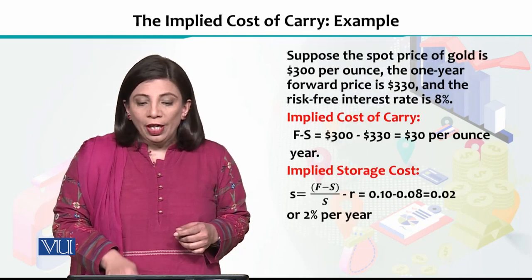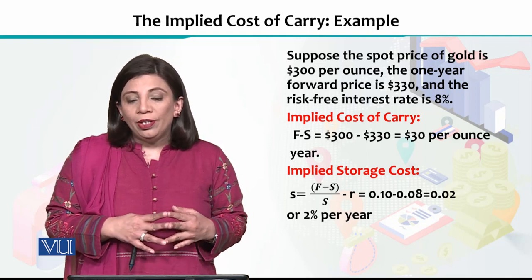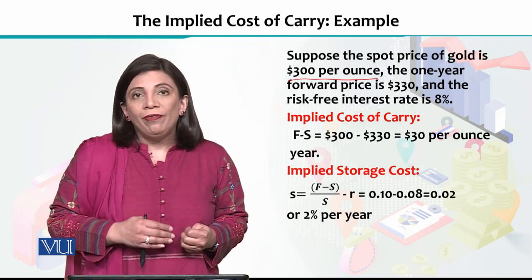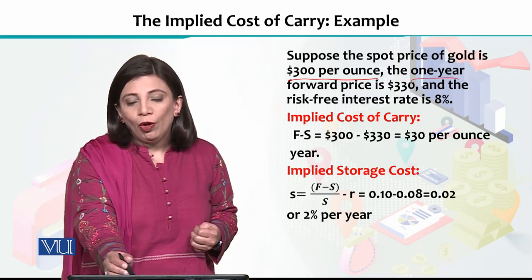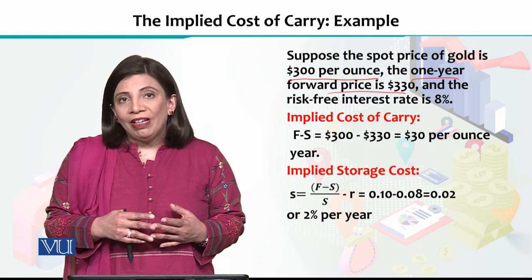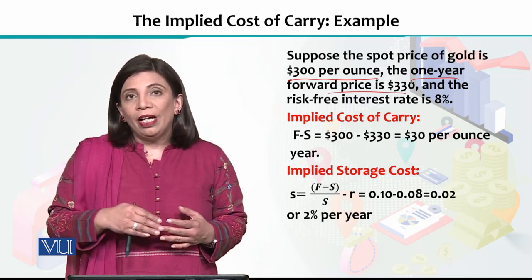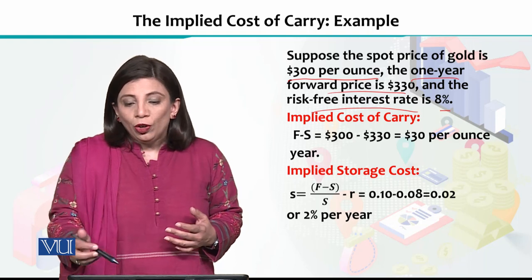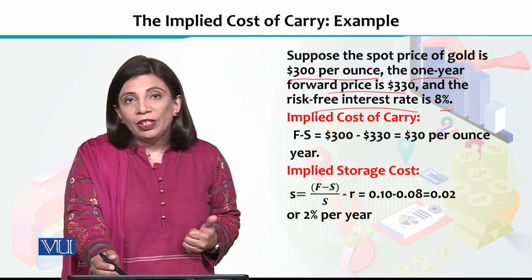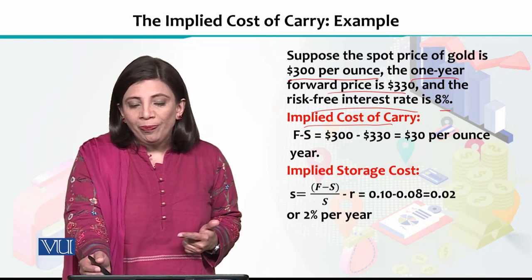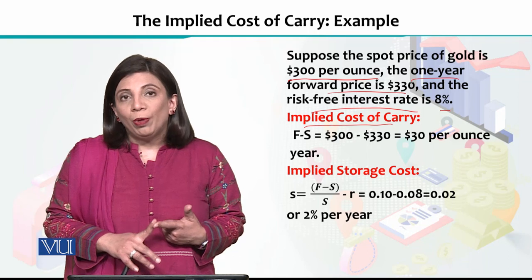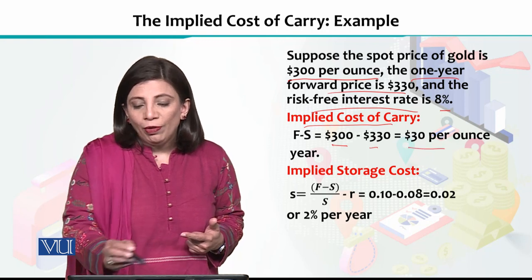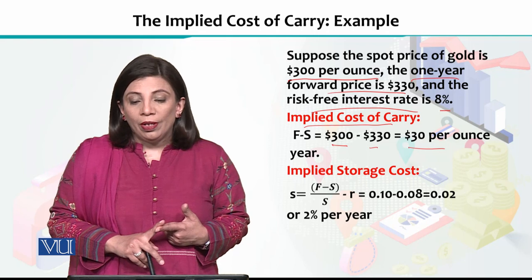To explain this concept with an example: suppose we are investing in gold. The spot price of gold is $300 per ounce, and we intend to invest for one year, so the forward price is $330 per ounce. The risk-free interest rate is assumed to be 8%. Using this information, the implied cost of carry is simply the forward price minus the spot price: $330 minus $300, which gives $30 per ounce per year.